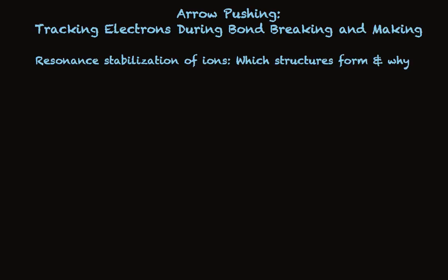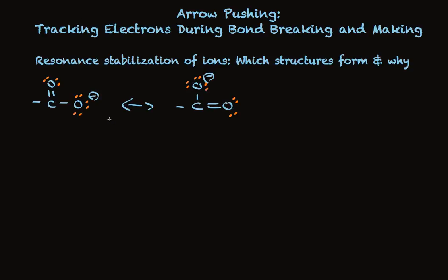Let's take a look at resonance stabilization of ions — which structures form and why. Arrow pushing lets us explain that easily. Carboxylic acids are especially acidic because the conjugate base, when they lose a proton, is resonance stabilized. We say there are two possible resonance structures. That's easy to see when we track what's happening with the unshared electron pairs and the electrons involved in the pi bond. Resonance structures involve moving electron pairs only. A pair of electrons on one oxygen has been used to form a new pi bond between that carbon and oxygen, and a pair of electrons involved in this pi bond has moved up onto oxygen.